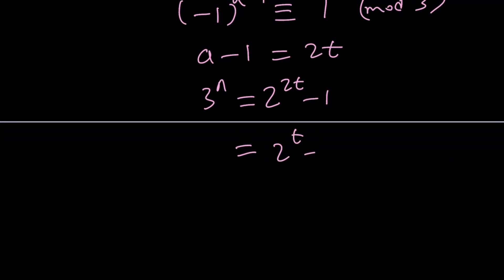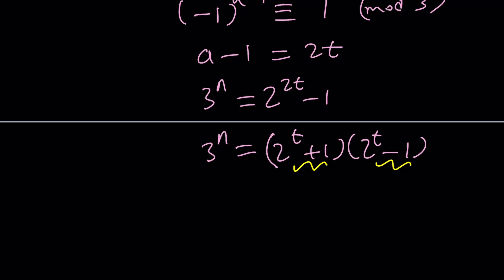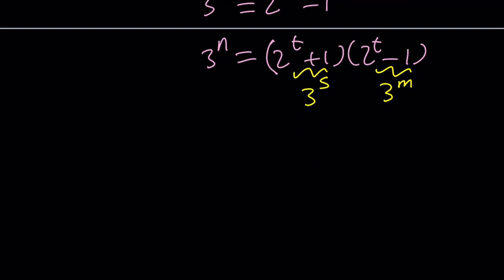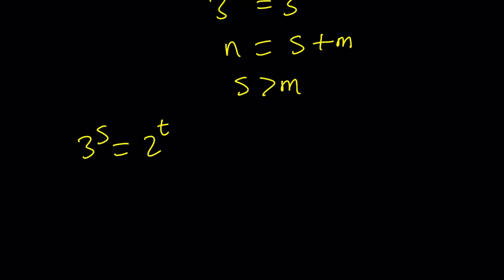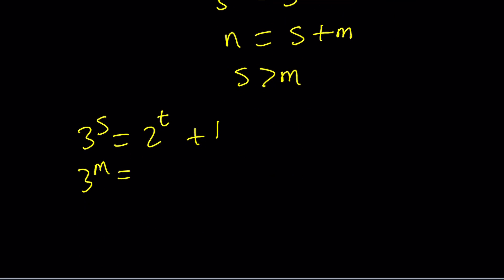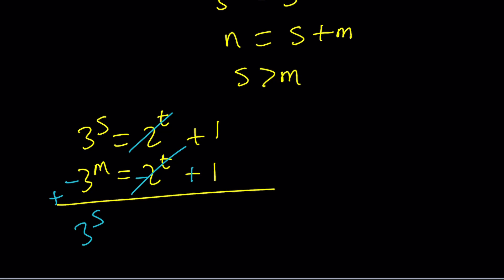We factor 2 to the 2t minus 1 as (2 to the t plus 1) times (2 to the t minus 1). Since this equals 3 to the n, which is a power of 3, both factors must be powers of 3. So we set 2 to the t plus 1 equals 3 to the s, and 2 to the t minus 1 equals 3 to the m. Then 3 to the n equals 3 to the s plus m, meaning n equals s plus m, with s greater than m. Subtracting the two equations, the 2 to the t cancels and we get 3 to the s minus 3 to the m equals 2.